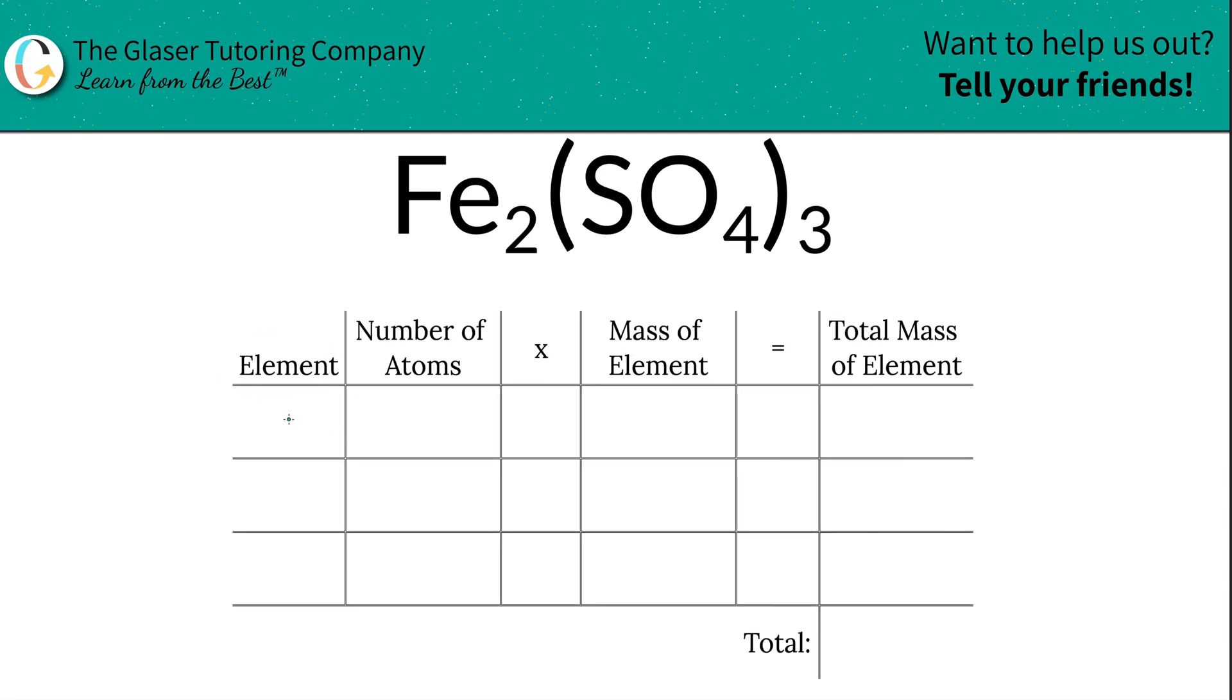The first step is to write down the elements we see in the compound: iron, sulfur, and oxygen. Next, identify the number of atoms using the subscripts. The subscript of iron is 2, so we have two iron atoms.